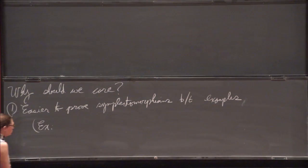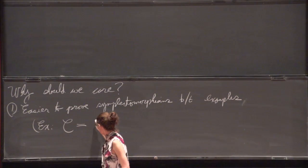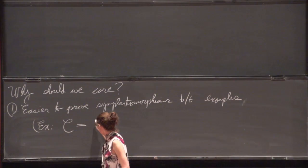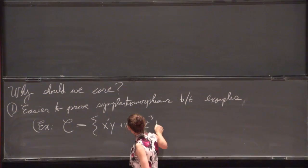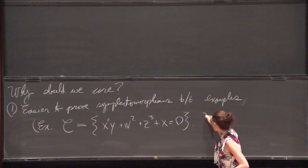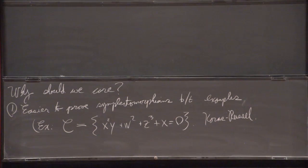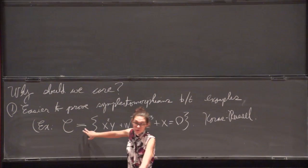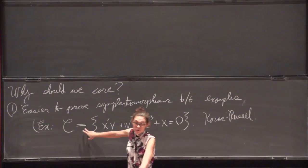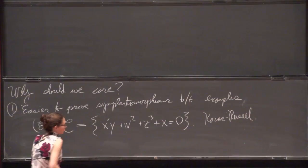So as an example, there's something called the Koras-Russell threefold. This is defined by z cubed plus x squared y equals zero, I think. And it was originally studied because it's an interesting example of an affine variety which is diffeomorphic to C^3 but algebraically distinct from C^3.